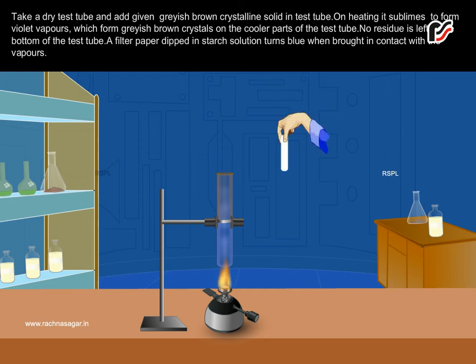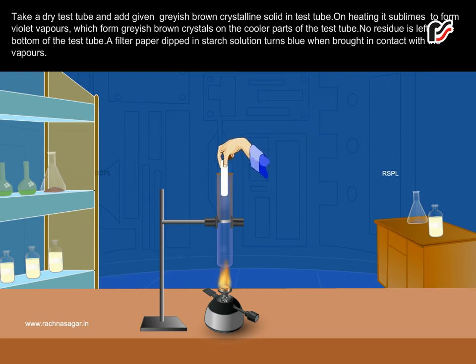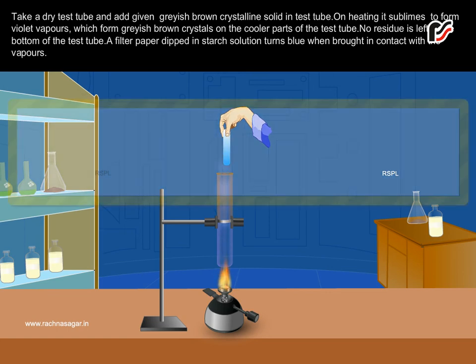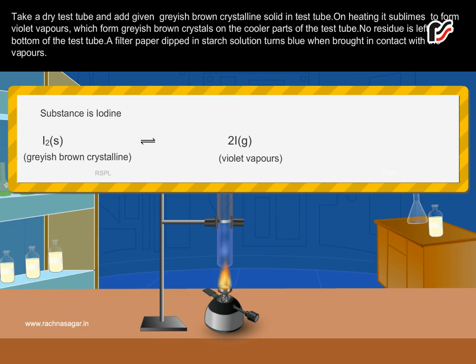A filter paper dipped in starch solution turns blue when brought in contact with the vapors. The substance is iodine.